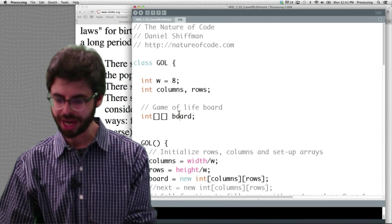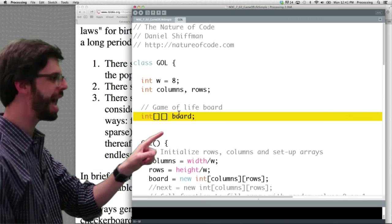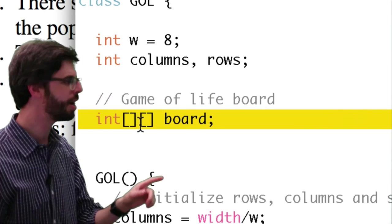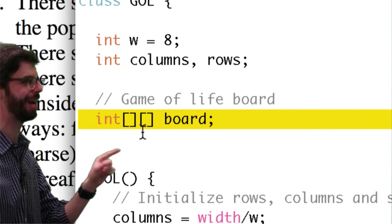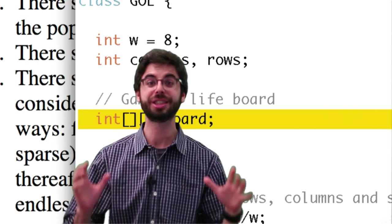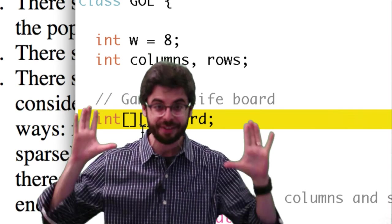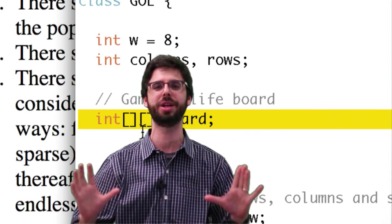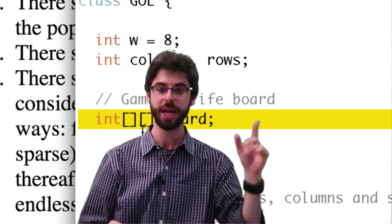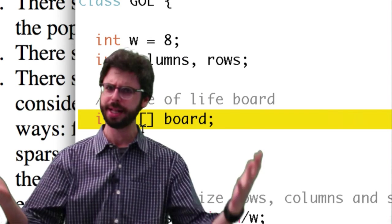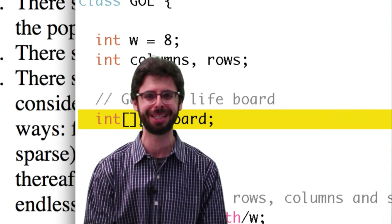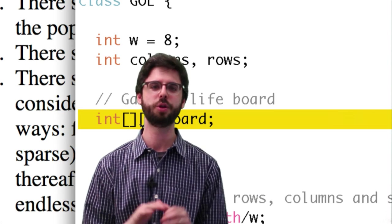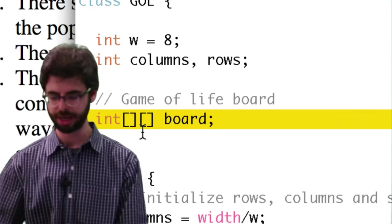Number one we should point out is that no longer do we have a one-dimensional array. We now have a two-dimensional array talking about our CA. Our CA is, at a given generation, is a two-dimensional grid of states, not a one-dimensional grid. So in this example we have a two-dimensional array. And if you are not familiar with two-dimensional arrays, I will include a link to a tutorial on the processing website about two-dimensional arrays.